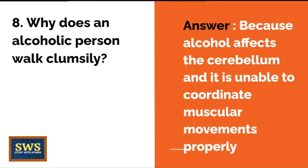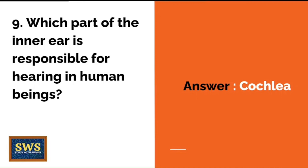Question 8: Why does an alcoholic person walk in a clumsy manner? That's because alcohol affects the cerebellum, and it is unable to coordinate muscular movements properly. Question 9: Which part of the inner ear is responsible for hearing in human beings? The correct answer is the cochlea.